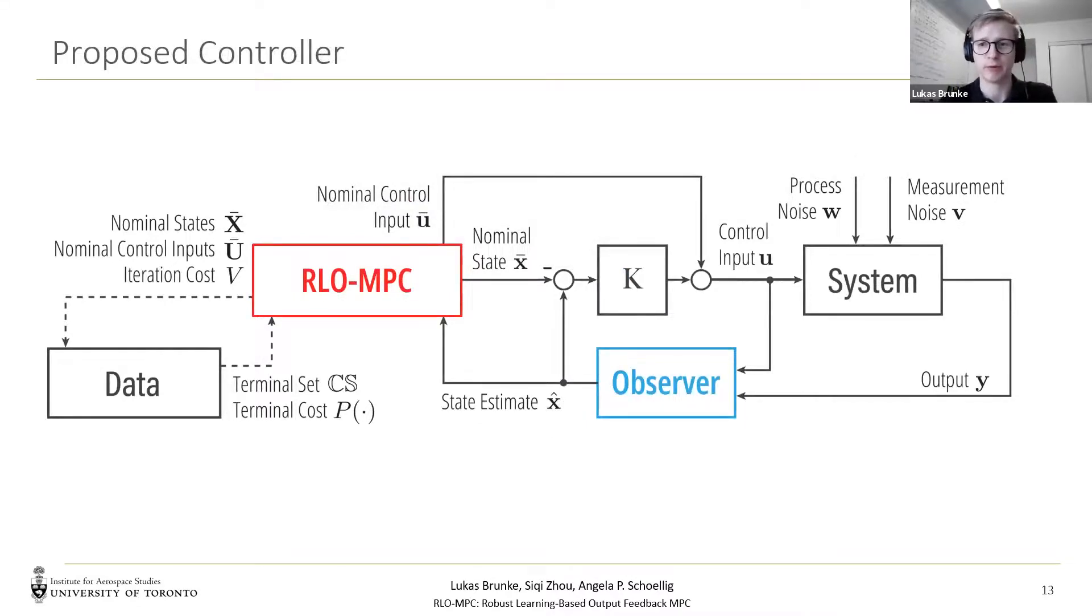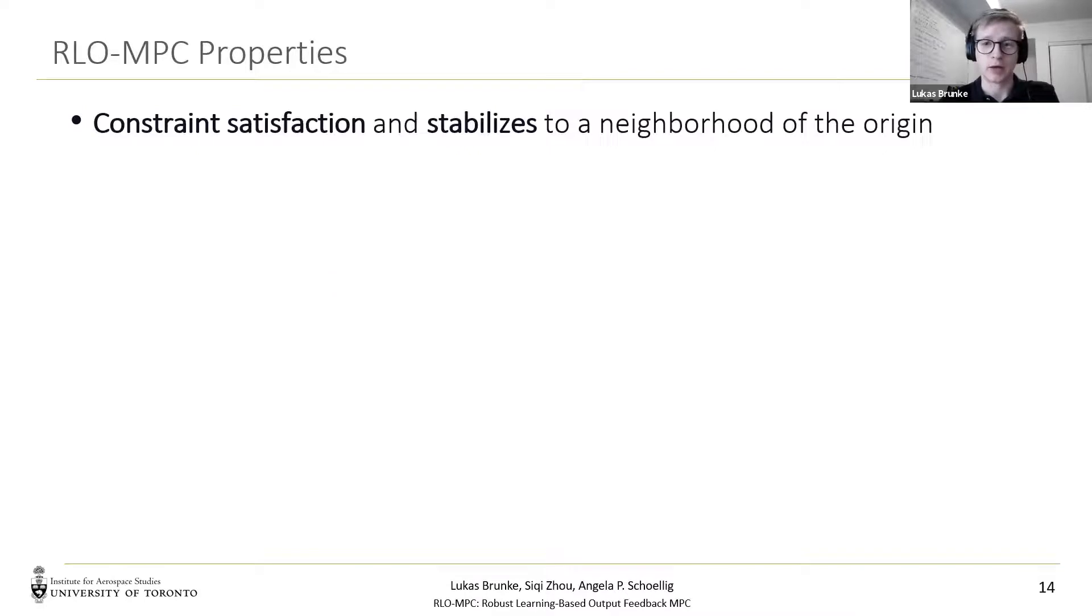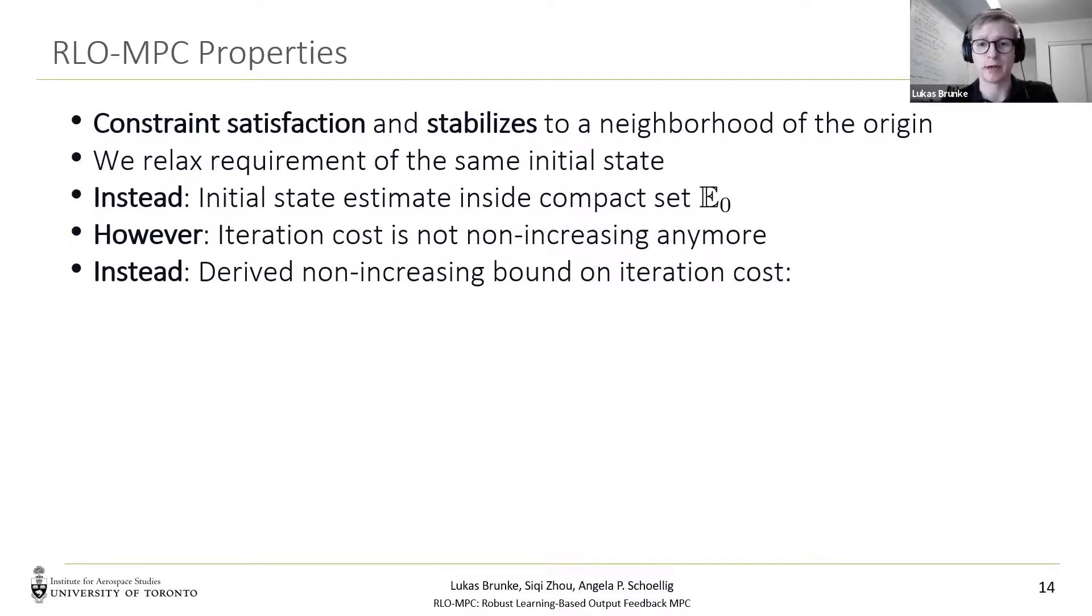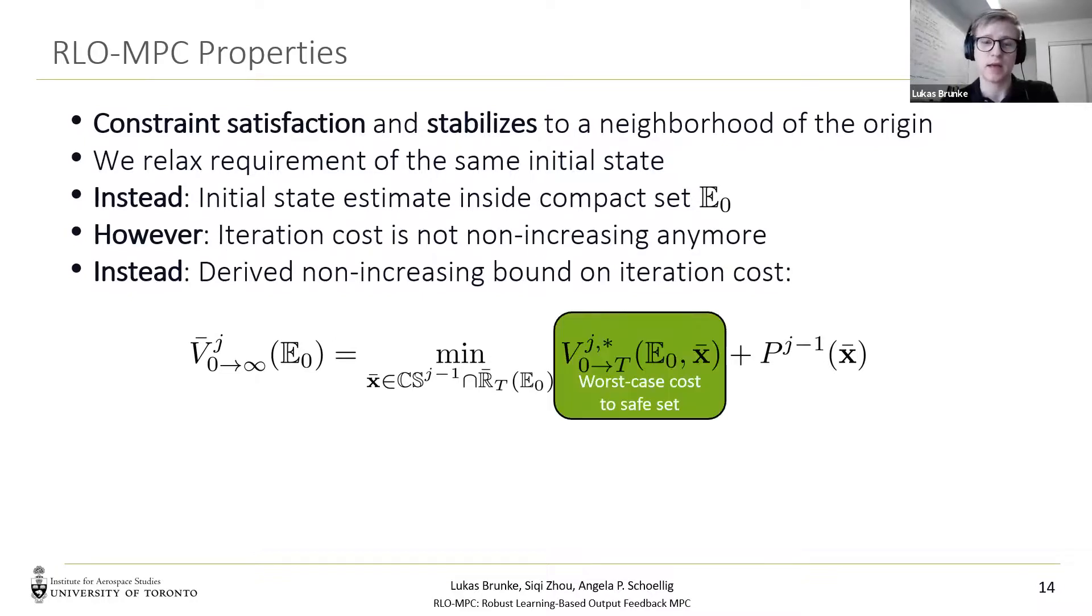Now we have all the ingredients for the proposed robust learning based output feedback MPC. So what are the properties of the controller? In our paper, we show that our RLO MPC guarantees constraint satisfaction and stabilizes the system to a neighborhood around the origin. We also relaxed requirements from earlier work that needs the initial state to be the same at each iteration. And instead, we only require the initial state estimate to stay inside a compact set E0. This in turn leads to not necessarily non-increasing iteration costs anymore. And to still give guarantees on the performance improvement, we derived a non-increasing bound on the iteration cost. And the iteration cost uses a worst case cost from our initial state estimate safe set to the safe set and the learned cost to go.